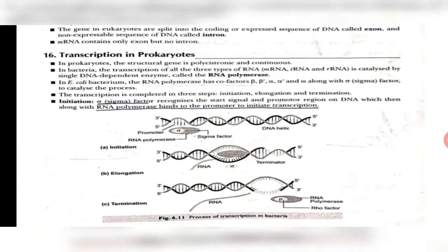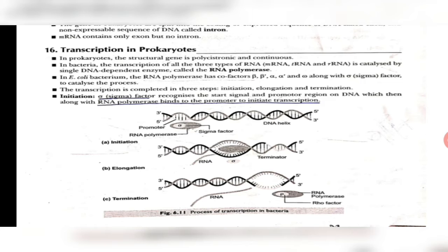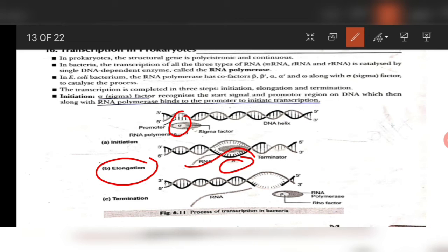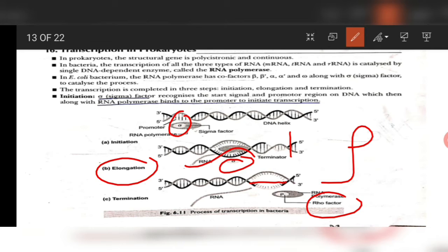Let us now see the process of transcription in prokaryotes. The first process is initiation — the DNA unwinds and RNA polymerase binds at the promoter region. But RNA polymerase is not an initiation enzyme, so it requires a cofactor called the sigma cofactor, which initiates the process and then dissociates. After that, elongation continues and the mRNA is formed. When RNA polymerase reaches the terminator sequence, a cofactor called the rho cofactor joins and dissociates it from the main DNA. The double-stranded DNA then re-forms its bonds. This process is known as termination of transcription.